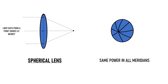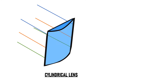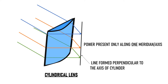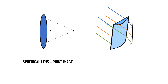When these parallel rays of light pass through a cylindrical lens, unlike a spherical lens that has the same power along all its meridians, a cylindrical lens has power only along one meridian or one axis. So parallel rays passing through the cylinder converge to form a line perpendicular to the axis of the cylinder. Thus a spherical lens forms a point image and a cylindrical lens forms a line image.